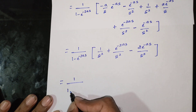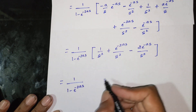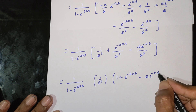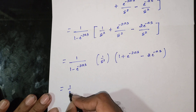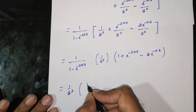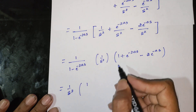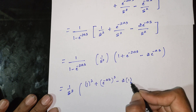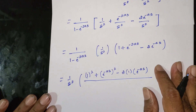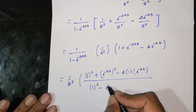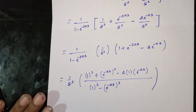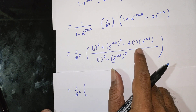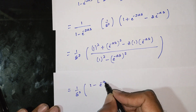So we have 1 by (1 minus e power minus 2as) times 1 by s squared times (1 plus e power minus 2as minus 2 e power minus as). Recognizing this as a perfect square: 1 plus e power minus 2as minus 2 e power minus as equals (1 minus e power minus as) whole square, using the identity a squared plus b squared minus 2ab equals (a minus b) squared, where a equals 1 and b equals e power minus as.